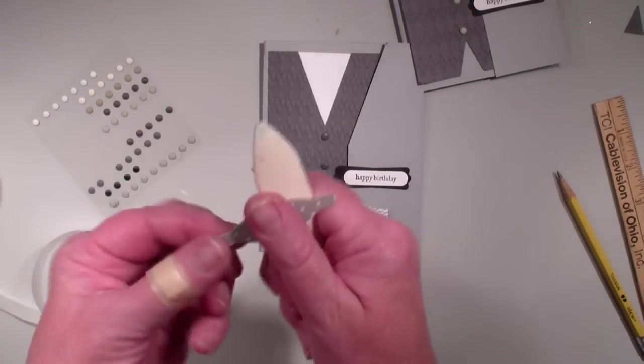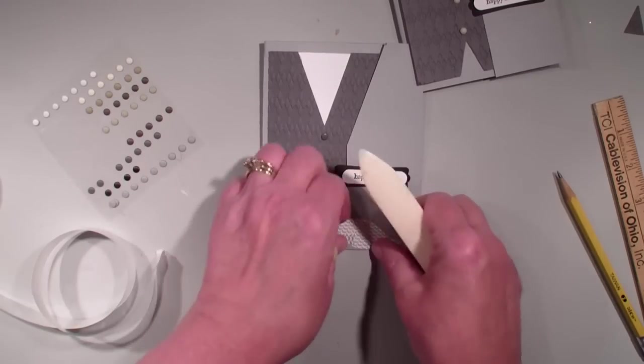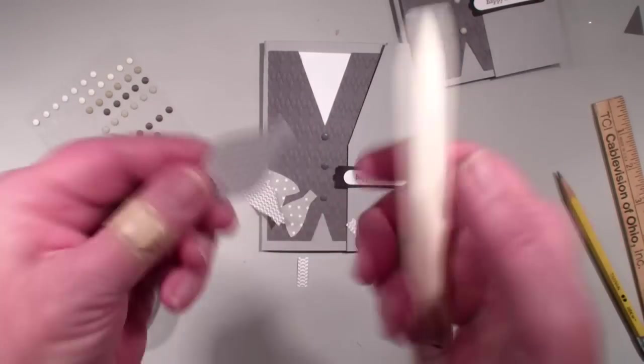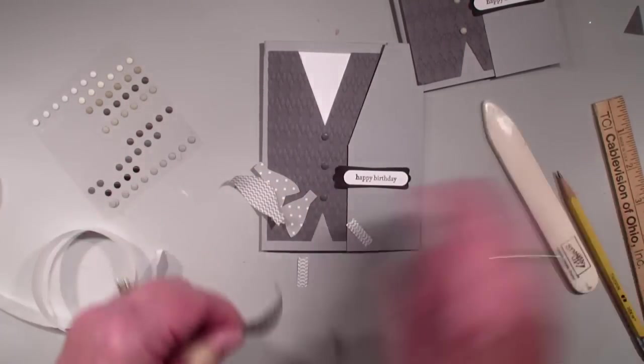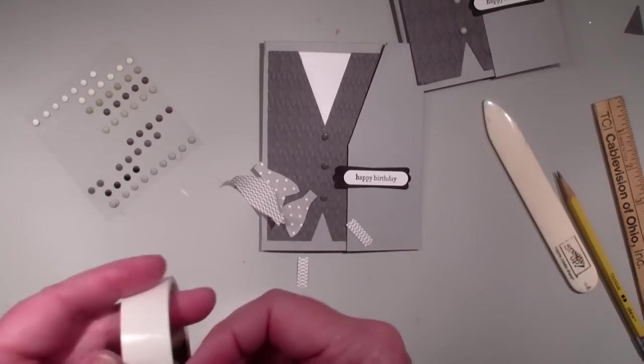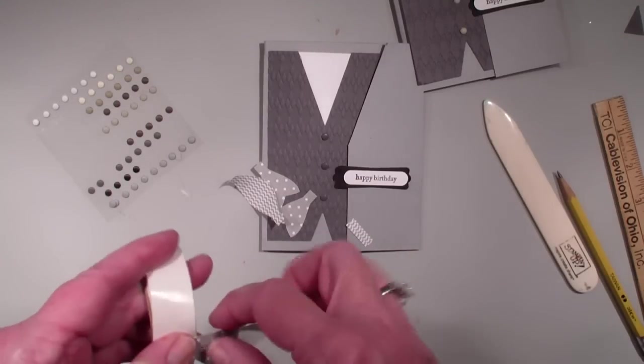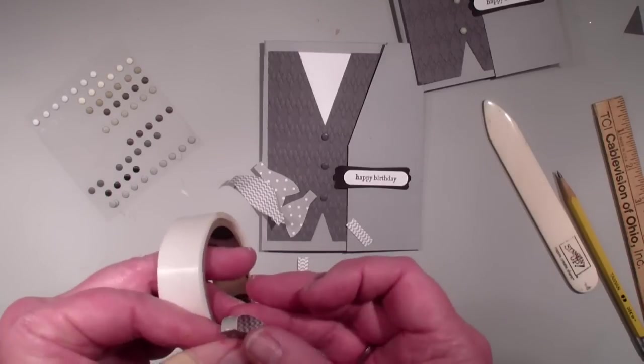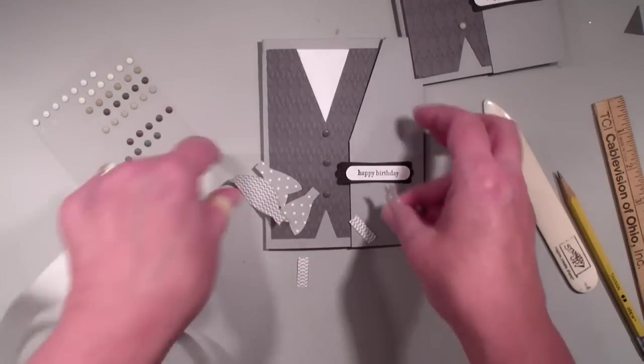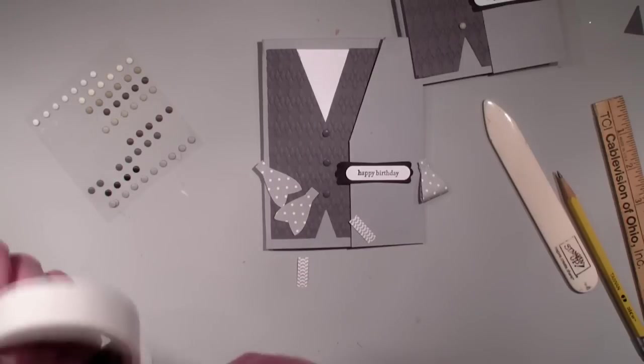I'm going to bring in my bone folder and kind of curl this piece here. I just find it easier to make that bow tie go together if you curl those pieces. I'm going to add a glue dot, put it together like so and the other one.